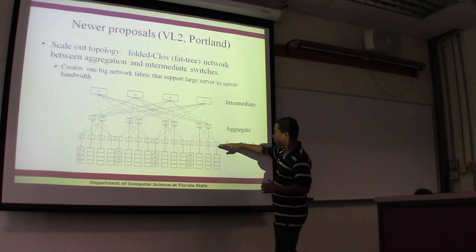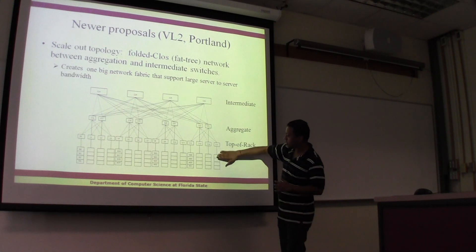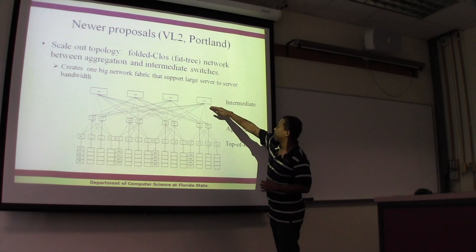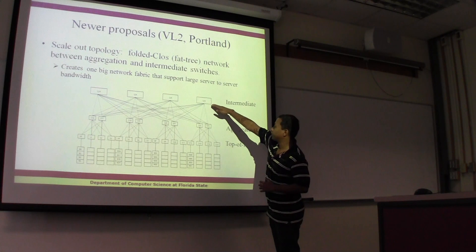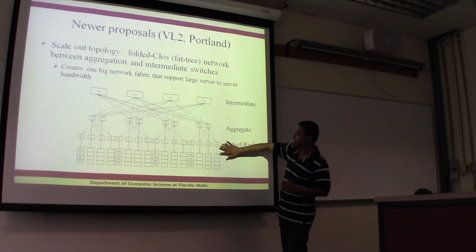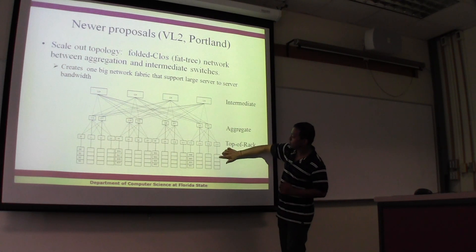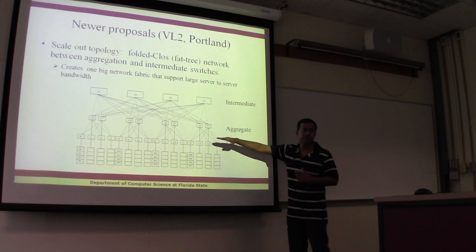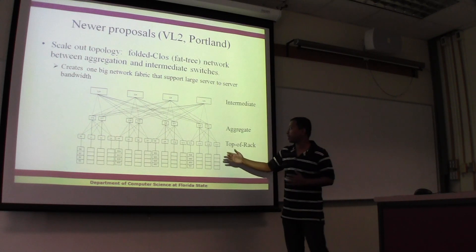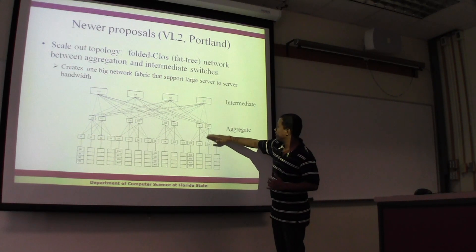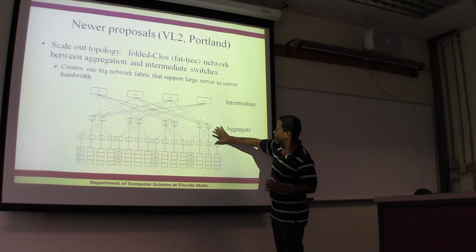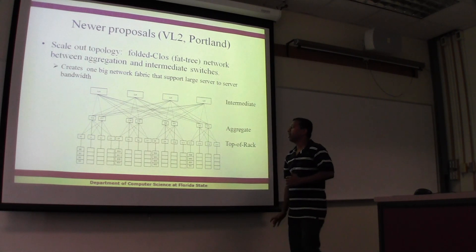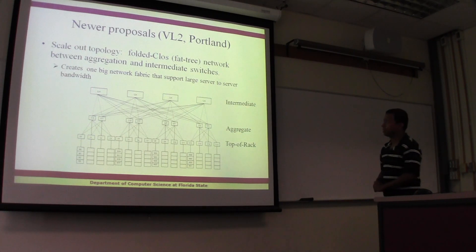Here we have top-of-rack switches, servers, aggregate switches, and then intermediate switches. Typically, the links connecting servers to the top-of-rack switches are 1 Gbps links, and the links between the switches — the intermediate and aggregate switches — are typically 10 Gbps links.